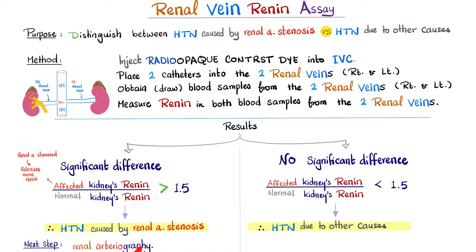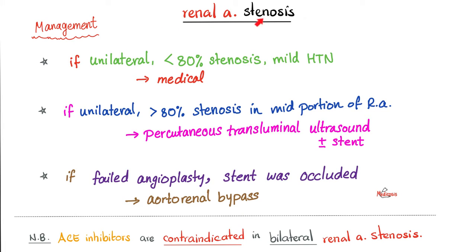Once confirmed, the next step is renal arteriography to assess how severe the narrowing is, which may require surgical intervention. However, if there is no significant difference between the right and left kidney renin levels, then whatever was seen on ultrasound or heard on auscultation is not the cause of the hypertension — meaning you need to look for other causes.